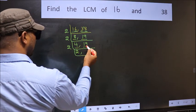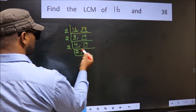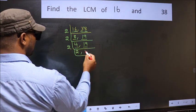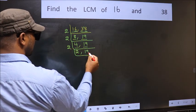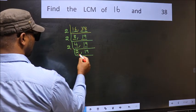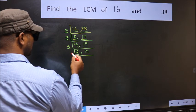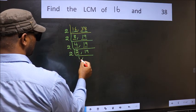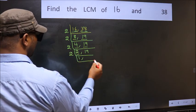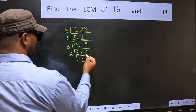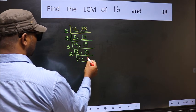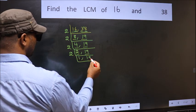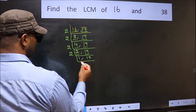The other number 19 is not divisible by 2, so we write it down as it is. Now here we have 2; 2 is a prime number, so 2 divided by 2 is 1. The other number 19 is not divisible by 2, so we write it down as it is.